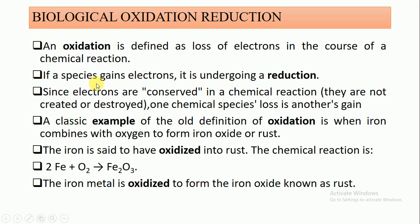Since electrons in a chemical reaction are neither created nor destroyed, what one species loses another gains. A classic example of oxidation is when iron combines with oxygen to form iron oxide — rust. In this chemical reaction, the iron is said to be oxidized. The rusting of iron is the classical example of oxidation.